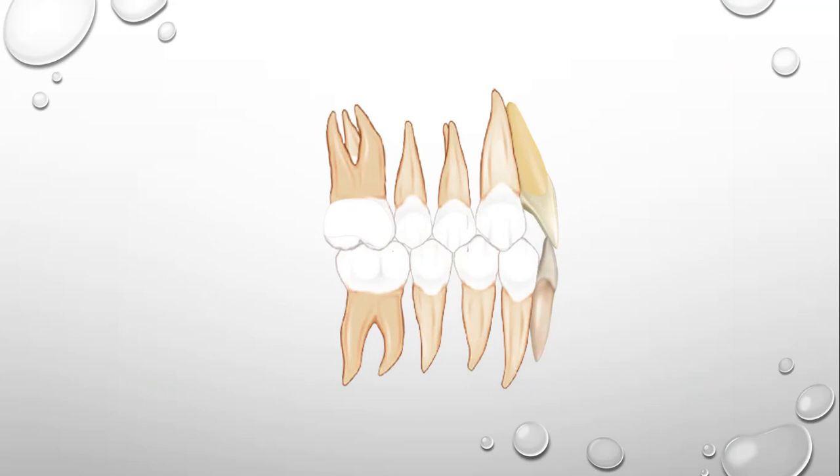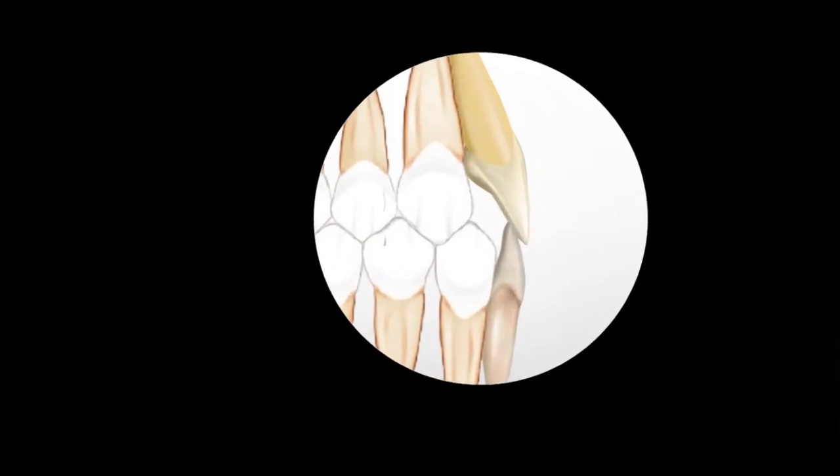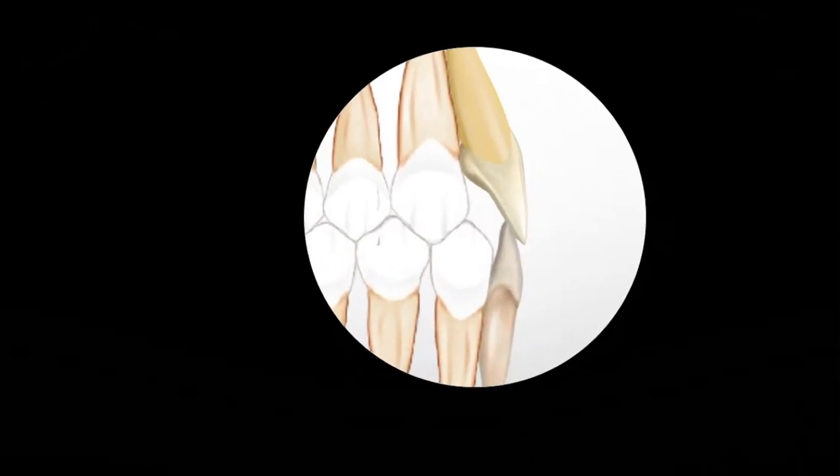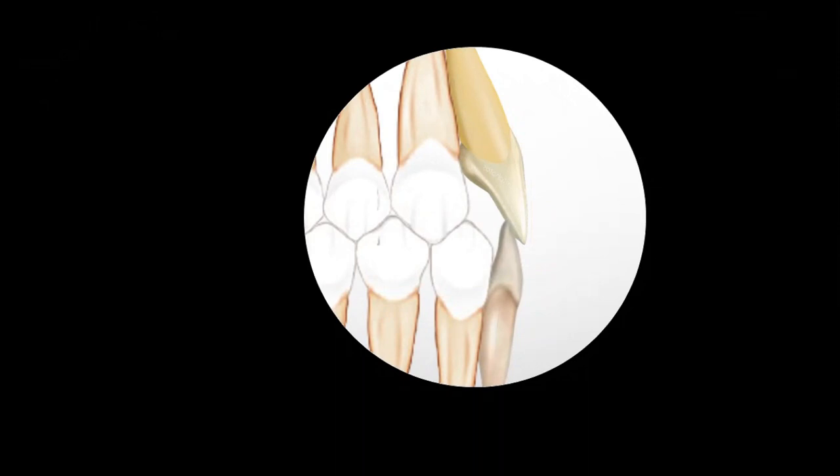If you see, this occlusion is an ideal occlusion. I am not going to discuss the other features of this occlusion, but look at the incisor relationship. There is normal overjet and normal overbite.